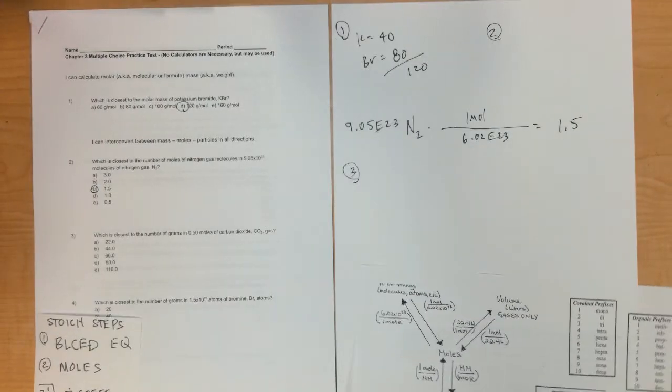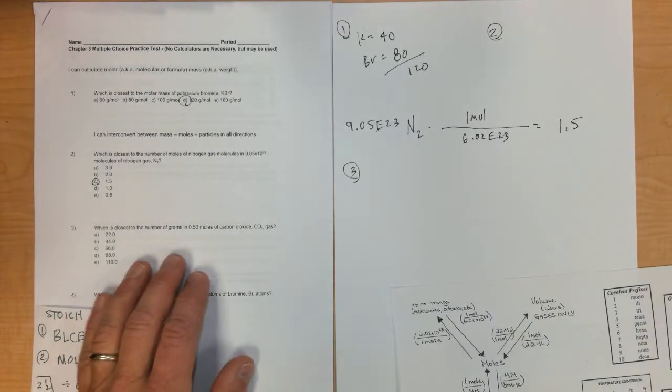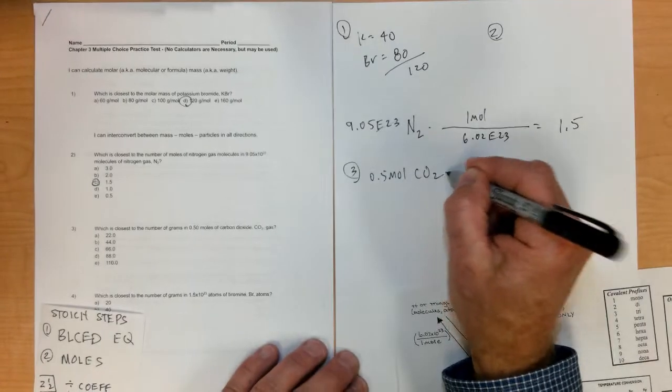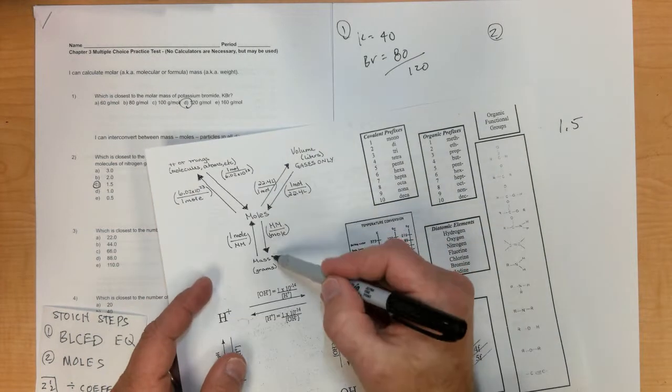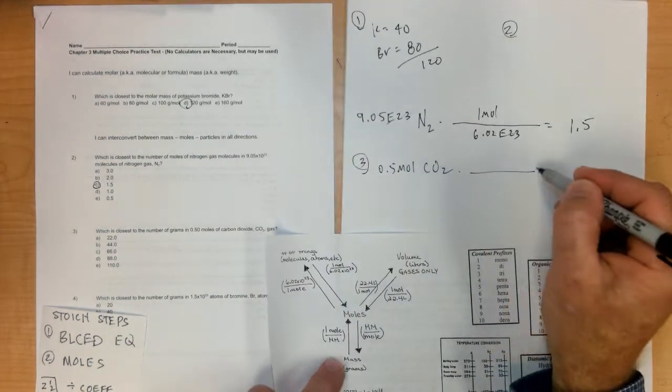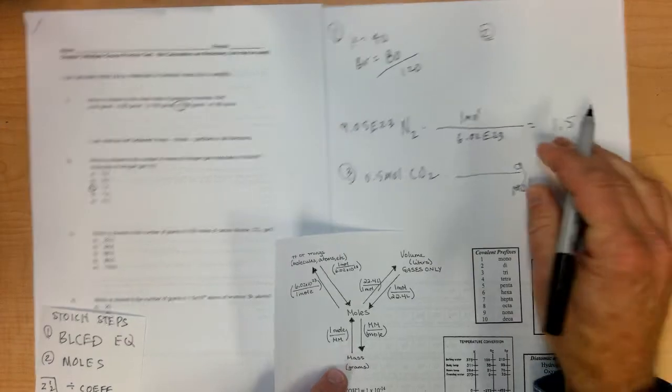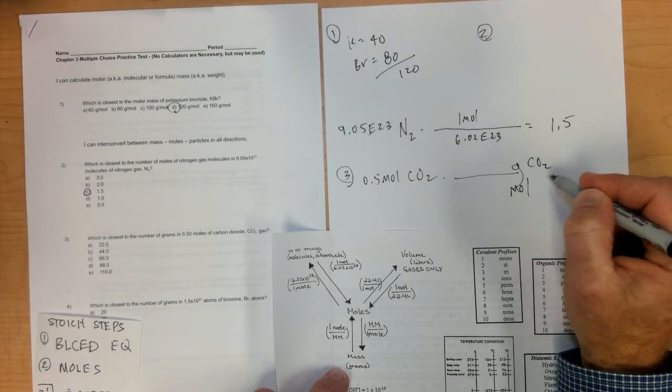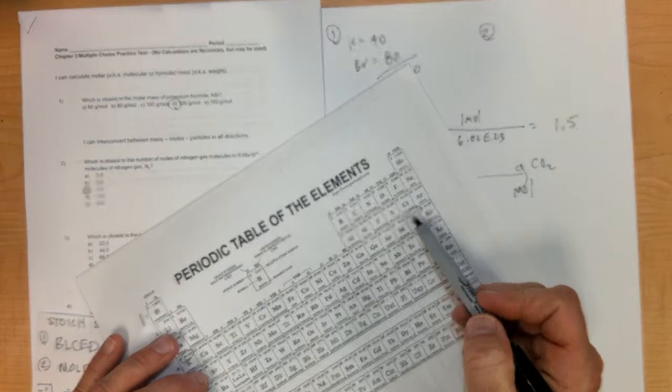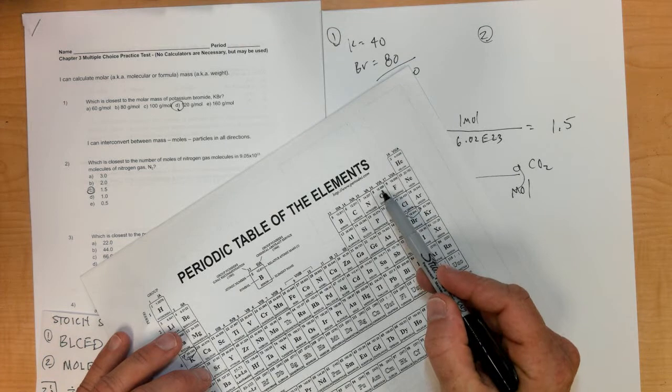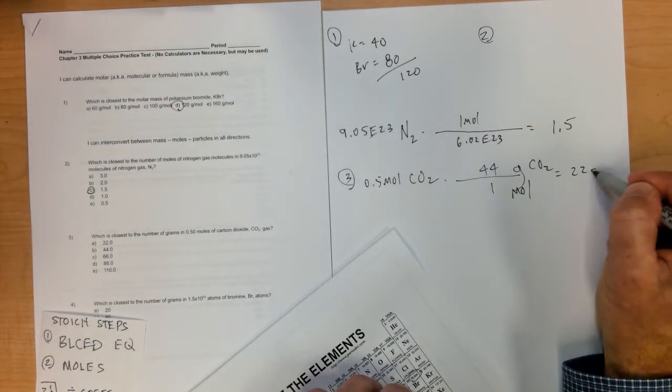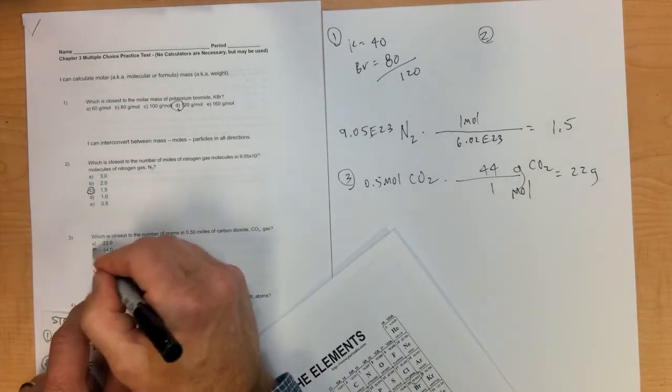Number three: which is closest to the number of grams in 0.5 moles of carbon dioxide? Now we're getting moles and we need to find grams. Molar mass goes on top. When you add up carbon dioxide, carbon is 12, oxygen is 16, multiply that by 2, so it's 44 grams in 1 mole, which gives about 22 grams, letter A.